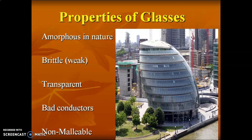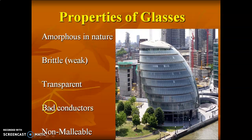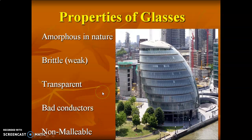The properties of glass: glass is amorphous in nature, brittle — which means it is weak and can be easily breakable. Glass is a bad conductor, which does not allow heat or electricity to flow through. It is non-malleable, so you cannot make glass into a thin sheet. These are the properties of glass.